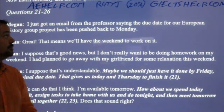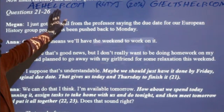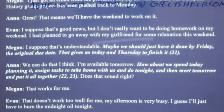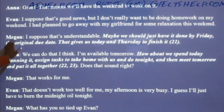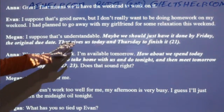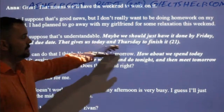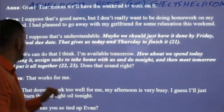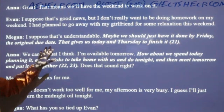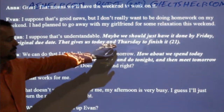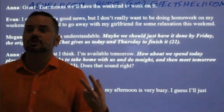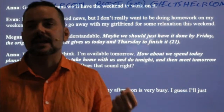Of course, you can find the books in our premium courses on aehelp.com and geltshelp.com. So here you have the answer highlighted. Megan says: 'I suppose that's understandable. Maybe we should just have it done by Friday, the original due date — that gives us today and Thursday to finish it.' Which means they have two days to finish it, which means that today is Wednesday.